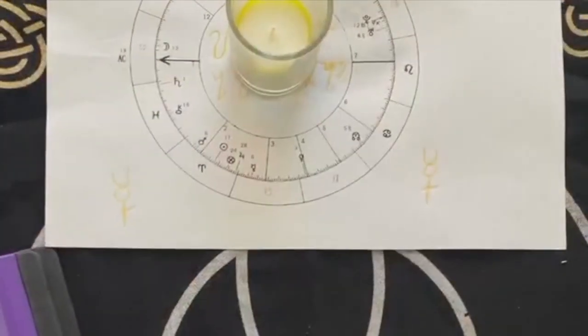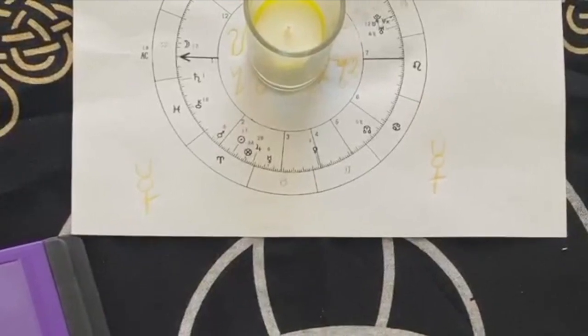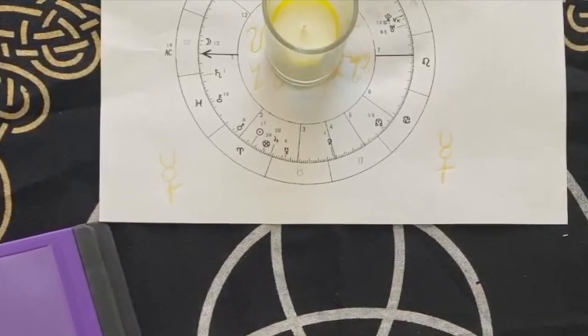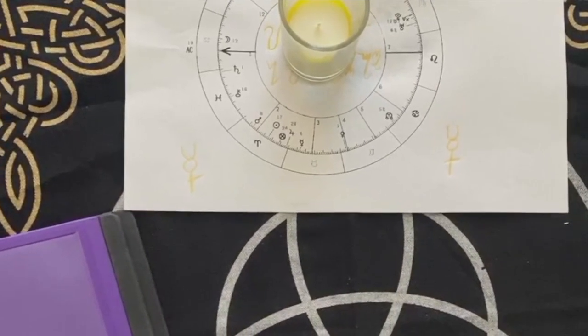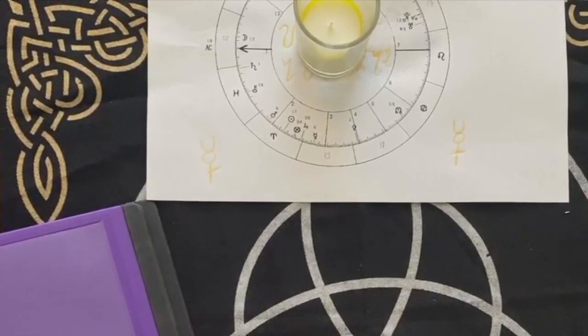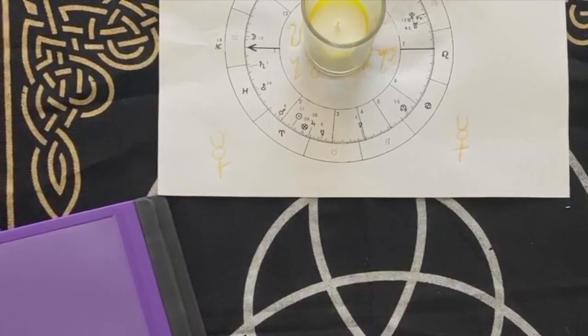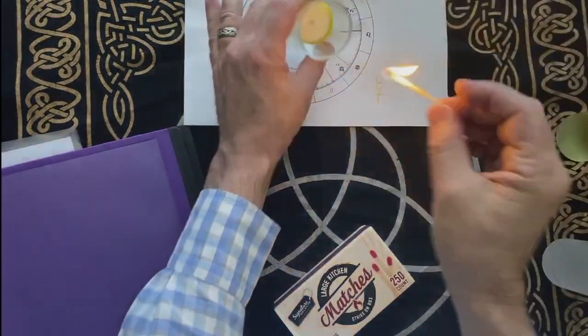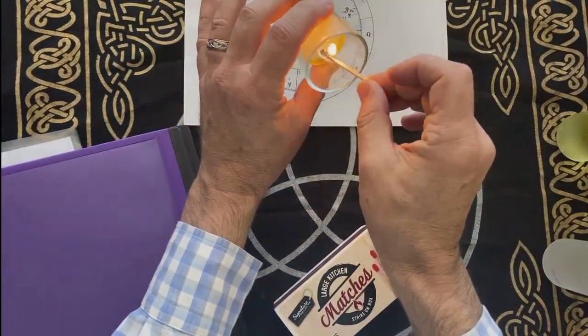And then I happen to have a yellow candle here, which I will use for mercury. And we are calling on infinite intelligence. And that's very helpful to always know the right thing to do, to always know the right decisions to make, right? Infinite intelligence. So I'm going to completely light this.